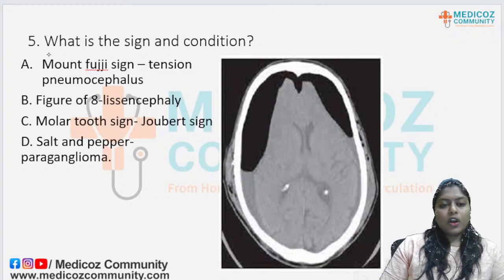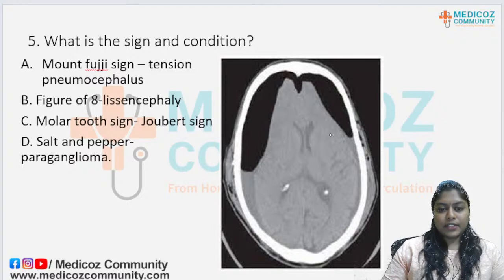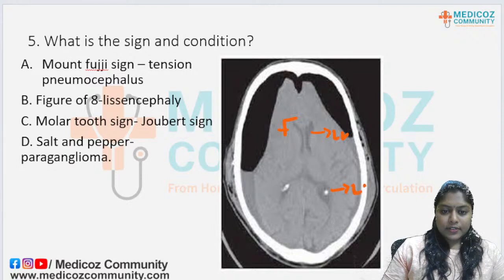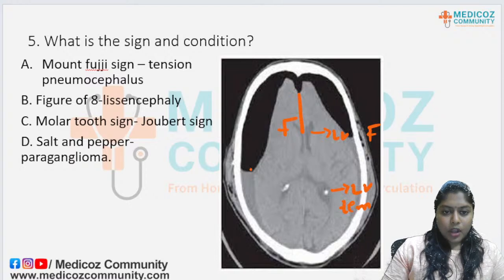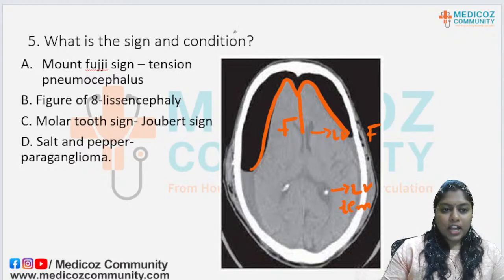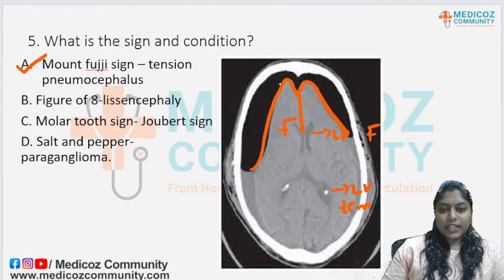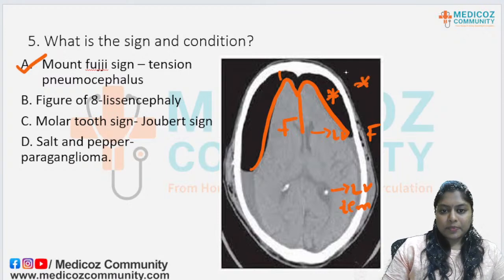Question 5 — what is the sign and condition? Identifying anatomy: frontal lobes, lateral ventricle, frontal horn, temporal horn of lateral ventricle. The cerebrum looks like a mountain shape. The answer is Mount Fuji sign, seen in tension pneumocephalus. The frontal veins pull the cerebrum upward, and there is air in the interhemispheric space — confirmed by the density HU matching that of air.